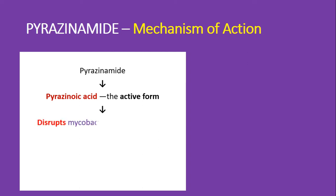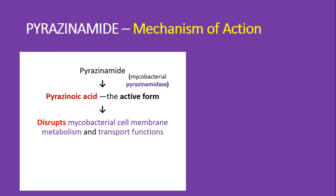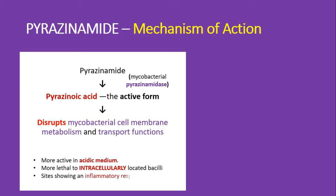Pyrazinoic acid is responsible for disruption of the mycobacterial cell membrane metabolism as well as transport functions. For the conversion of pyrazinamide to pyrazinoic acid, we require the mycobacterial pyrazinamidase enzyme. Pyrazinamide is more active in the acidic medium and more lethal towards intracellularly located tubercular mycobacteria.